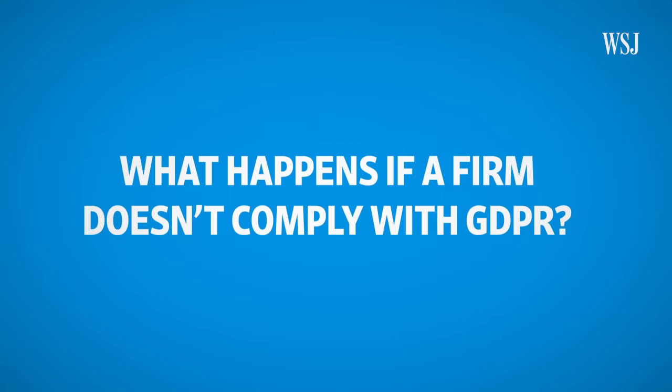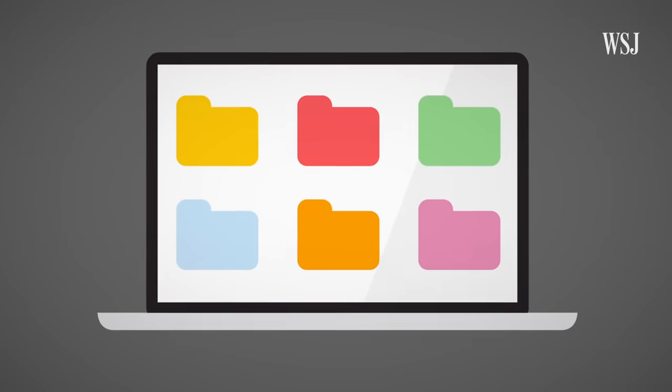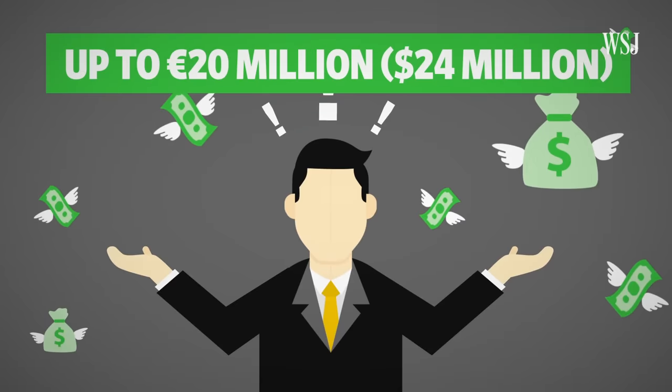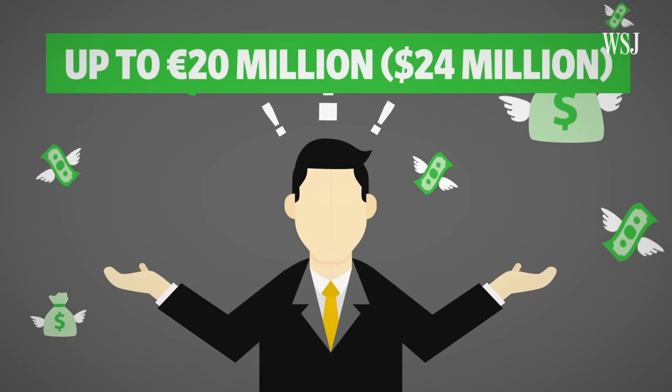What happens if a firm doesn't comply with GDPR? The penalty could be up to 20 million euros or 4% of annual turnover, whichever is larger.